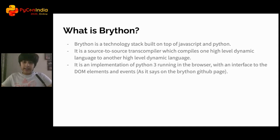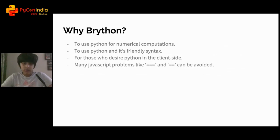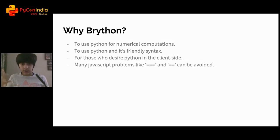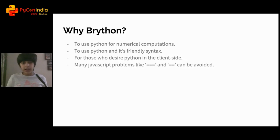So why Brython? Why don't you just use JavaScript? Well, first of all, you have access to Python and its friendly syntax — and who doesn't love Python? You can use Python for numerical computations, and many JavaScript problems can be avoided, like global variables and function scopes. Who likes the var keyword? And the most annoying thing in JavaScript is the difference between triple equals and double equals.